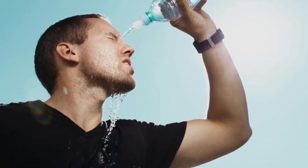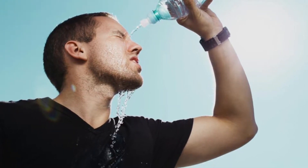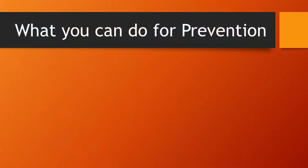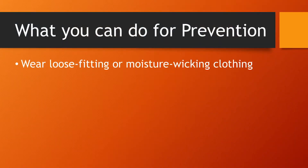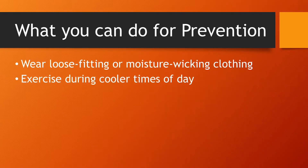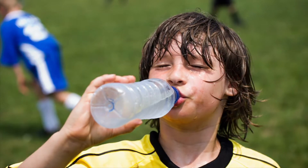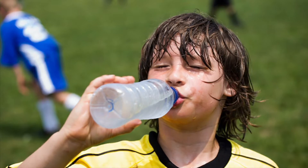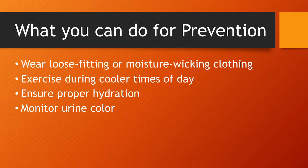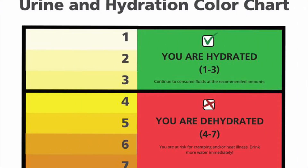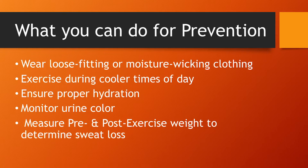There are several ways to help reduce the likelihood of serious heat illnesses. You should wear loose fitting or moisture wicking clothing, practice during cooler times of the day, and ensure proper hydration. A person should drink 17-20 fluid ounces of water 2-3 hours before exercise and another 7-10 fluid ounces 10-20 minutes before exercise. You should also monitor the color of your urine — if it becomes very dark, it could be a sign of dehydration. You can also weigh yourself pre and post exercise to determine the amount of sweat loss.